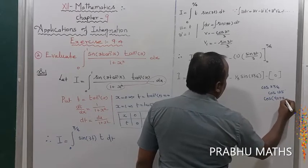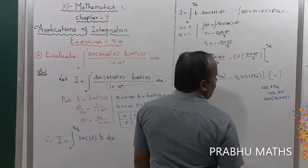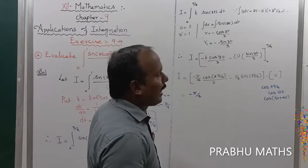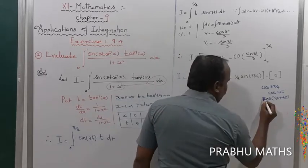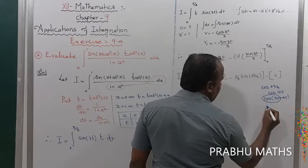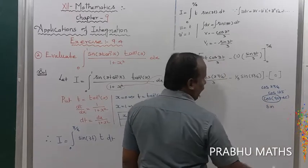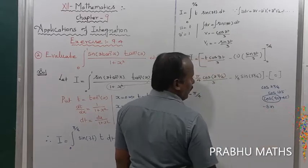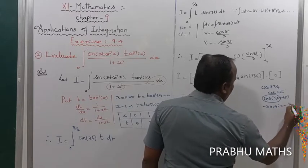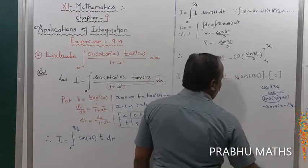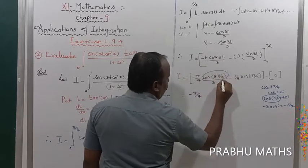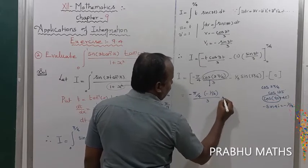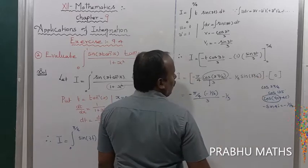Now cos(3π/4) = cos(135°) = cos(90° + 45°). Since 135° is in the second quadrant, cosine is negative. cos(90° + 45°) = −sin(45°) = −1/√2. So −(π/4)·(−1/√2)/3 = π/(4·3·√2) = π/(12√2).